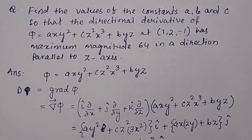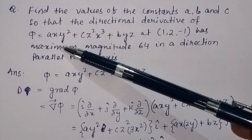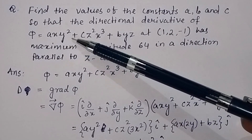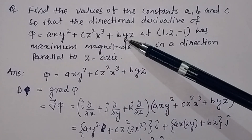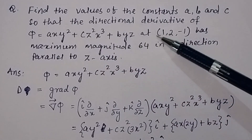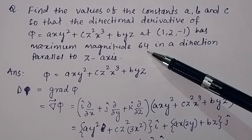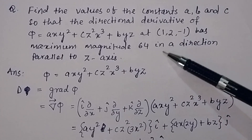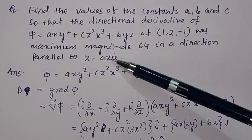Find the values of the constants a, b, and c so that the directional derivative of phi — where phi is given as axy² + cz²x³ + byz — at the point (1, 2, -1) has maximum magnitude 64 in a direction parallel to the z-axis.